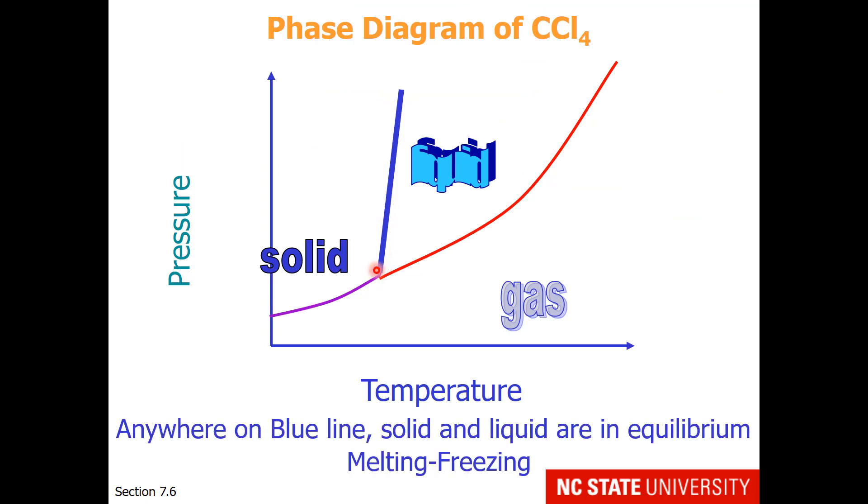To relate this to a compound, this is a mock-up of the phase diagram for carbon tetrachloride. And if I place a point on that blue line, we know that carbon tetrachloride melts at minus 23 degrees Celsius when the pressure is one atmosphere.